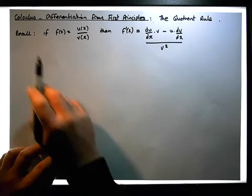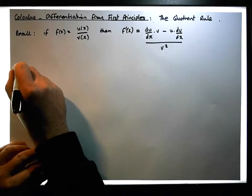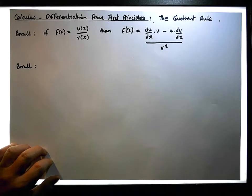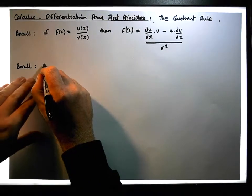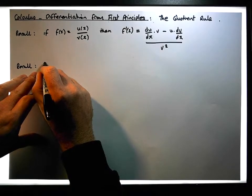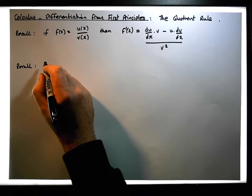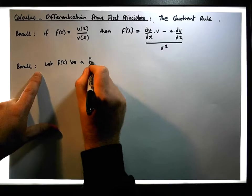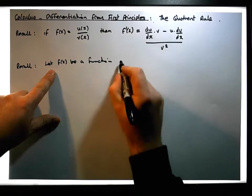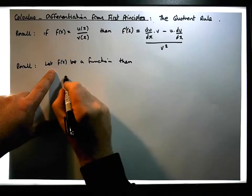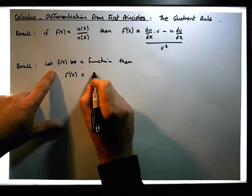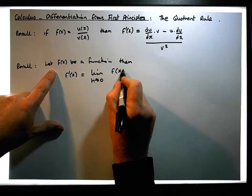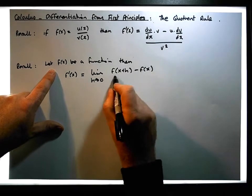Let's try to prove this from first principles. Let's recall what we mean by first principles and the derivative of a function. If we have a function, let f of x be a function, then its derivative f prime of x is equal to the limit as h tends to zero of f of x plus h minus f of x, all over h.